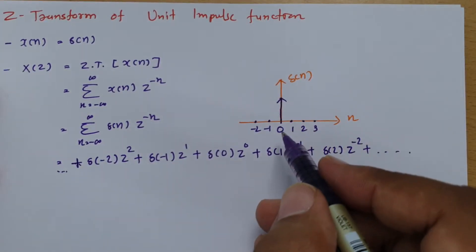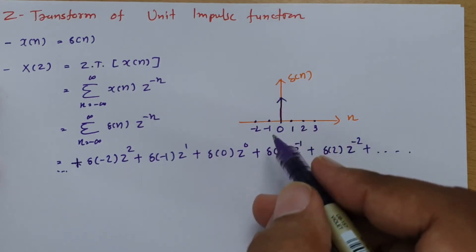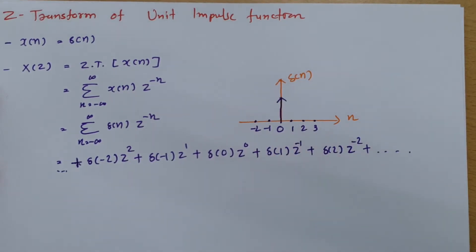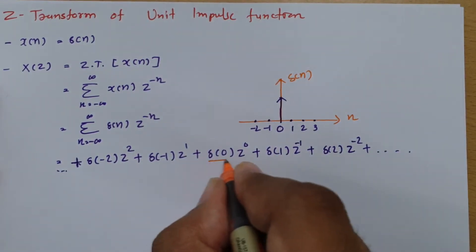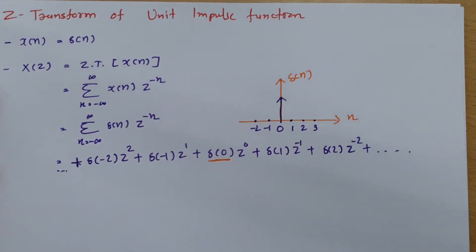But here one can observe that at n equals zero only, there is a sample. So only this term equals 1; other terms are 0.